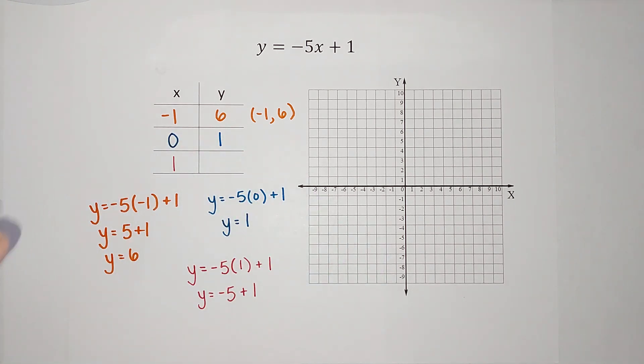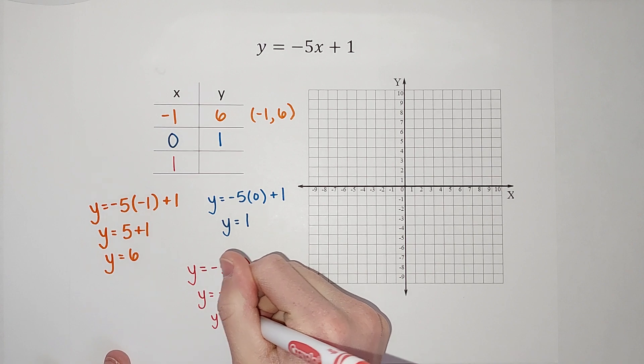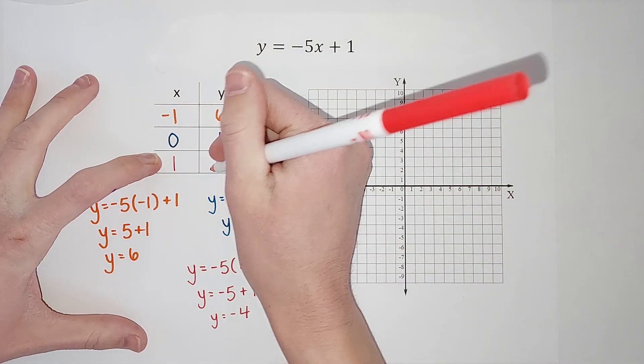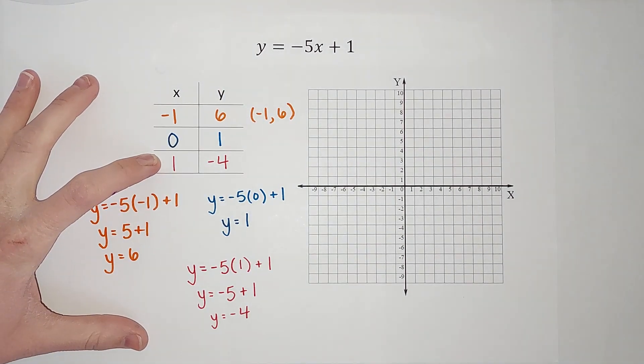Negative five plus one. That's like, I owe you $5 and I'm like, I don't have it all, but I can give you a dollar. So you're like, you still owe me $4, right? So negative four. So when X is one, Y is negative four.